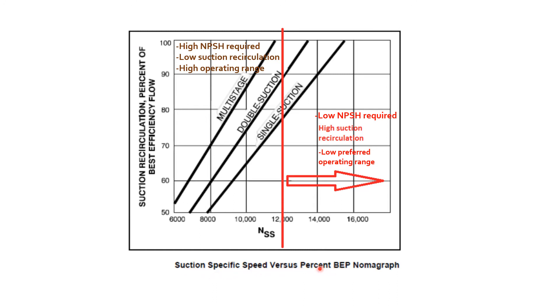Here we can see three pumps: single-section, double-section, and multi-stage. As the NSS number increases or decreases, we can see the operating margin is basically changing. The figure is set as 12,000.